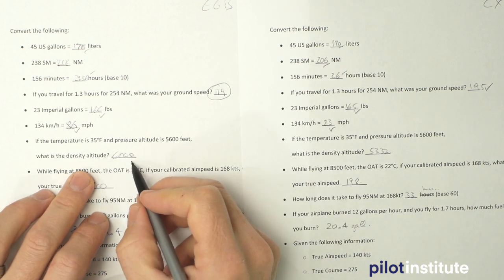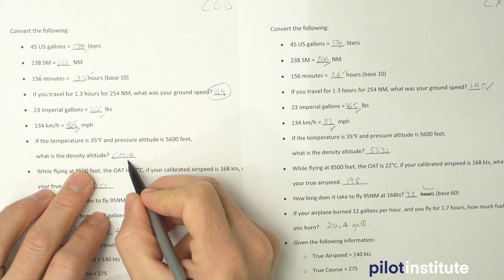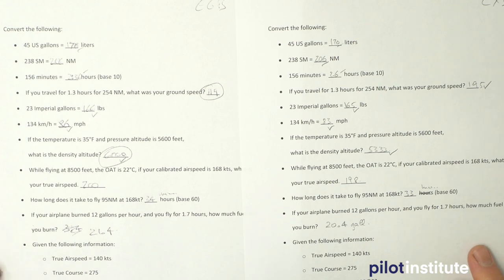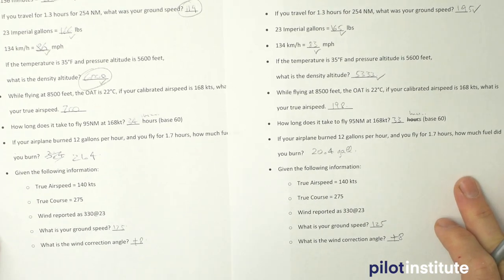Density altitude, that did not work out. I got 6000 with the E6B and 5353 here, so that's another error here with the E6B.